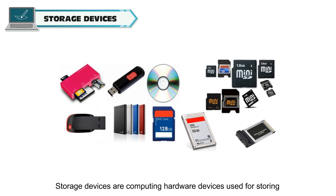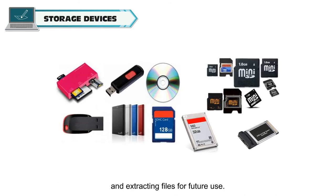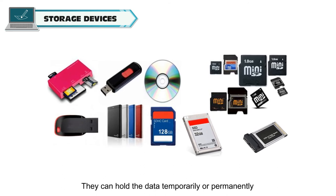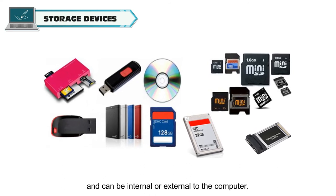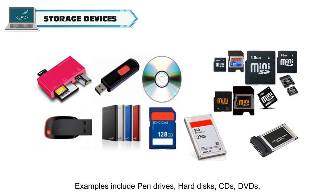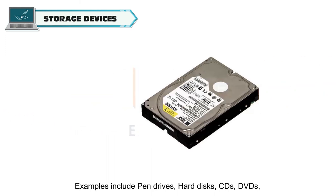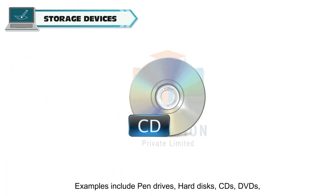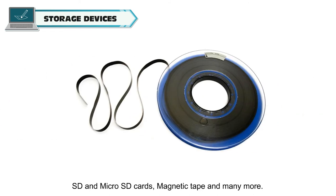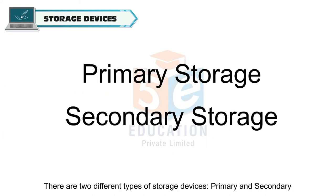Storage devices are computing hardware devices used for storing and extracting files for future use. They can hold the data temporarily or permanently and can be internal or external to the computer. Examples include pen drives, hard disks, CDs, DVDs, SD and micro SD cards, magnetic tape and many more. There are two different types of storage devices: primary and secondary.